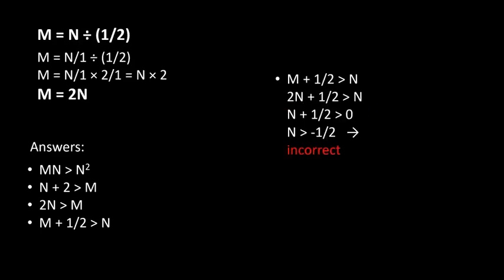The last option is M plus half is greater than N. Switching M with 2N plus half is greater than N, eventually we get N is greater than minus half. This is incorrect because we have no restrictions on M and N. They can get any value. Any restriction immediately implies that this is the incorrect answer.